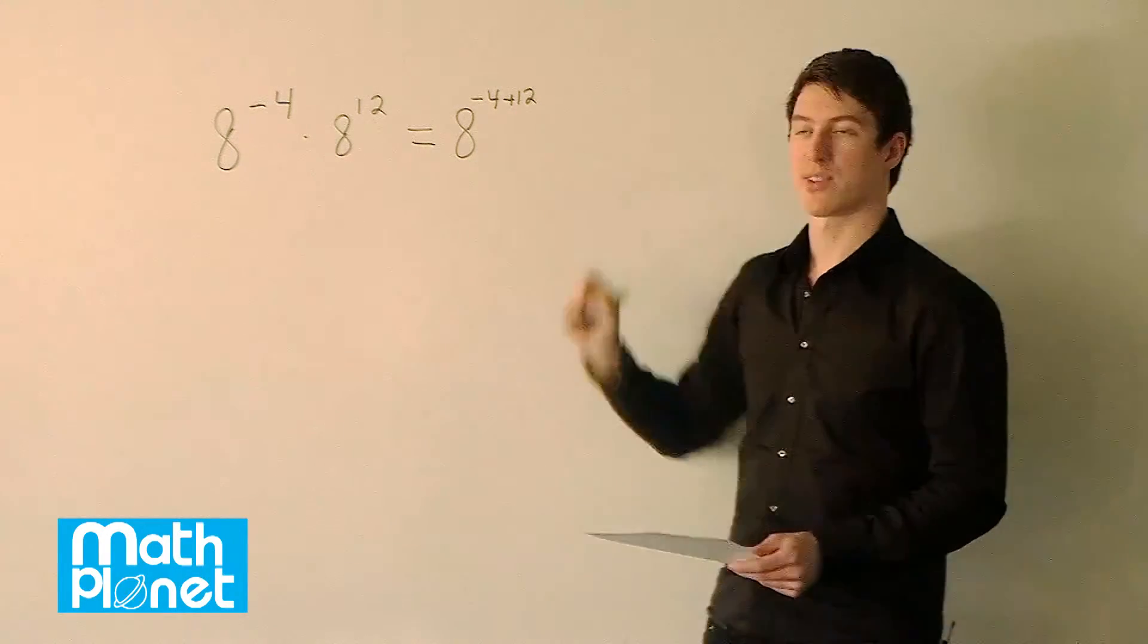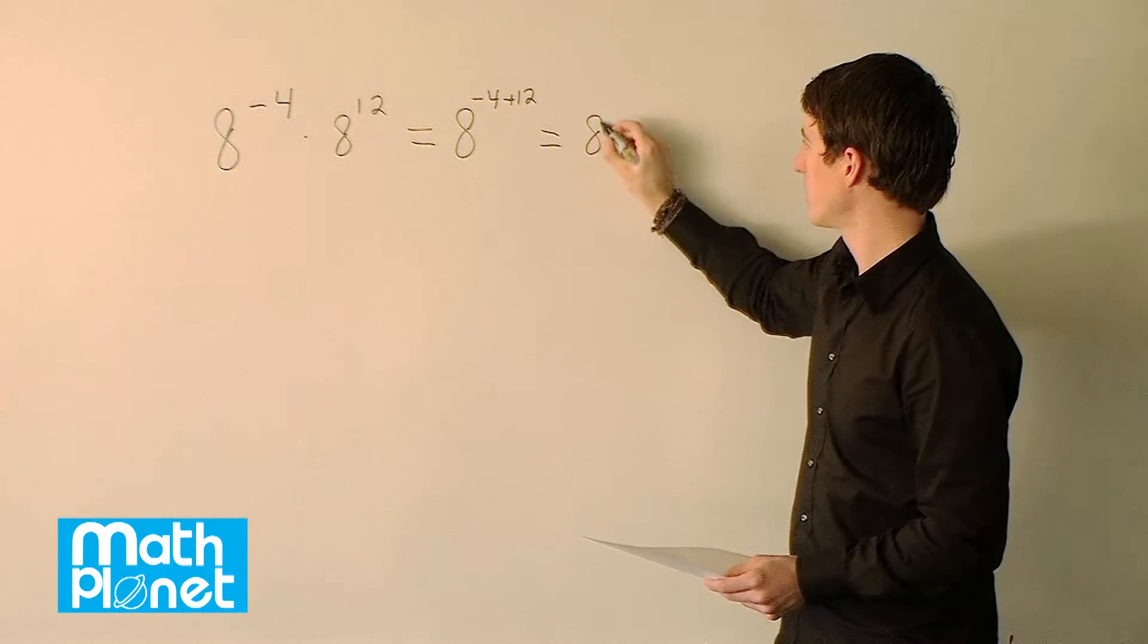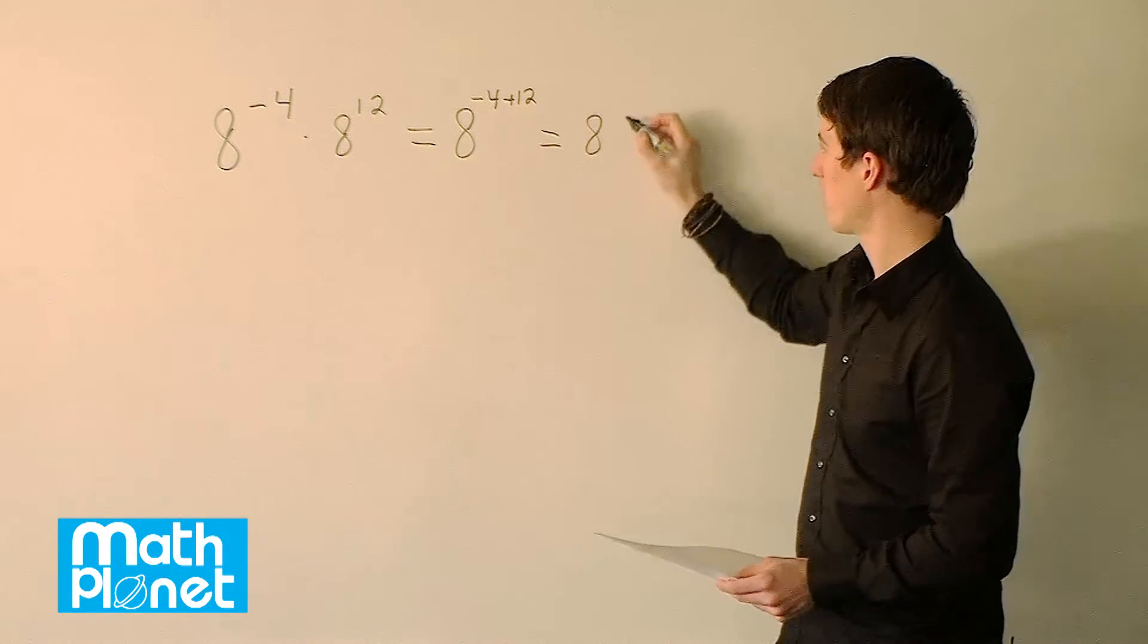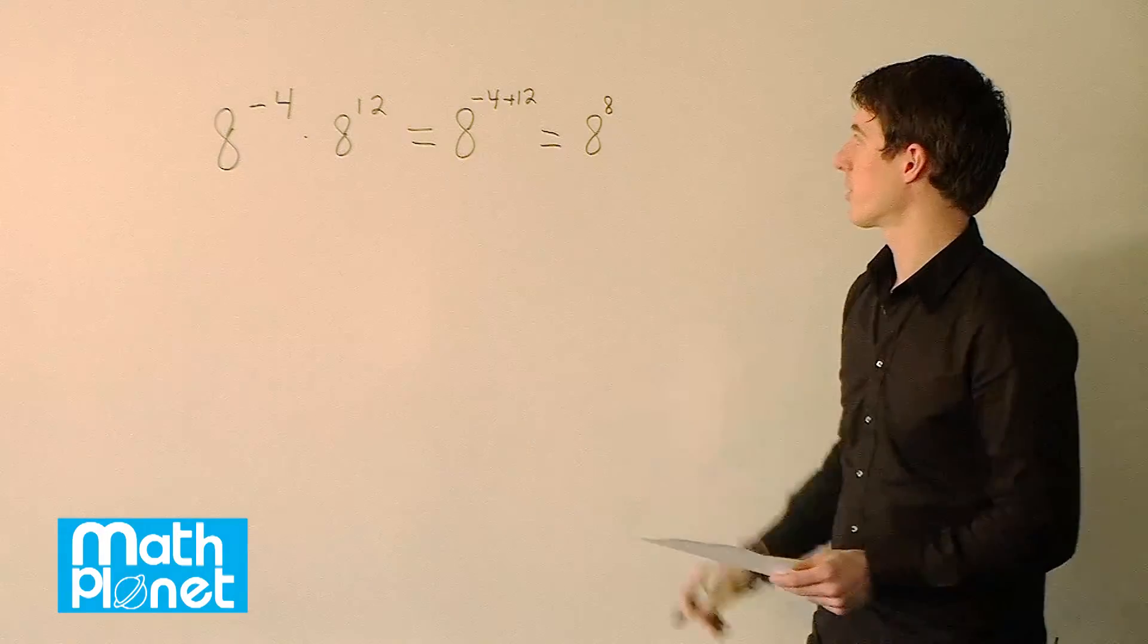And then of course we can just simplify that. So that becomes 8 to the negative 4 plus 12 is 8. So 8 to the power of 8 is our answer.